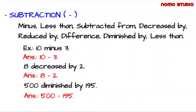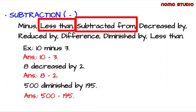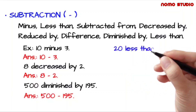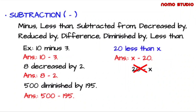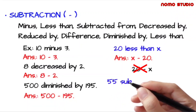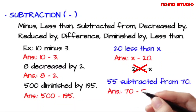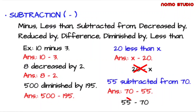Take note: in translating problems, the English terms 'less than' and 'subtracted from' are different in writing mathematical expressions. Using these phrases, the first term mentioned is written after the subtraction sign, while the last term mentioned is written before the subtraction sign. For example, '20 less than x' means x minus 20 — if you write 20 minus x, you are wrong. Similarly, '55 subtracted from 70' means 70 minus 55, not 55 minus 70. This principle only applies to these two phrases: less than and subtracted from.